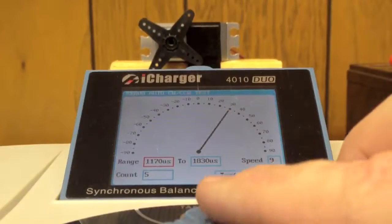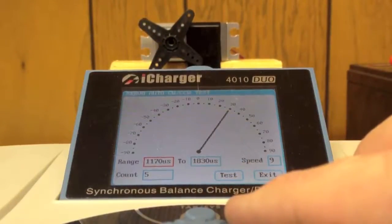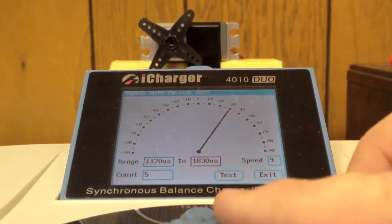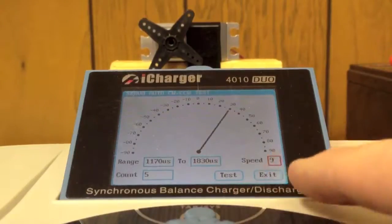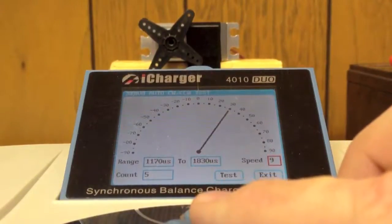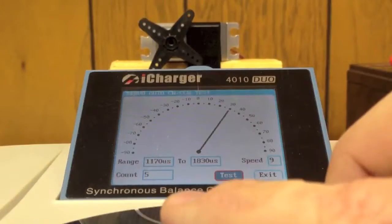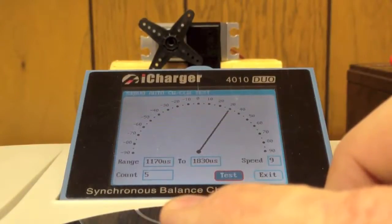And again, I set this up for a 30 degree range off of center to the left, 30 degree range off of center to the right for a total of 60 degrees. And right now I have my speed maxed out and I have it set for the counter to run 5 cycles. And I'm going to start this test and you'll see that you'll see the servo lagging behind the indicator here, but that's to be expected.